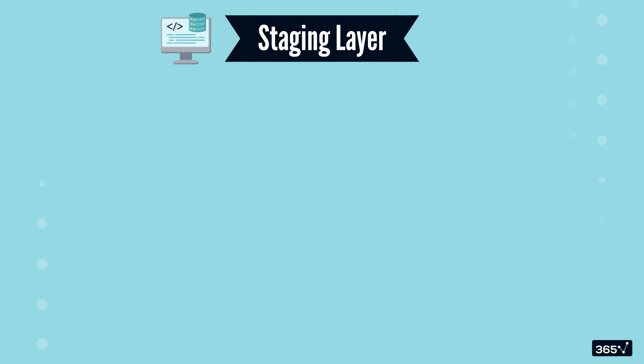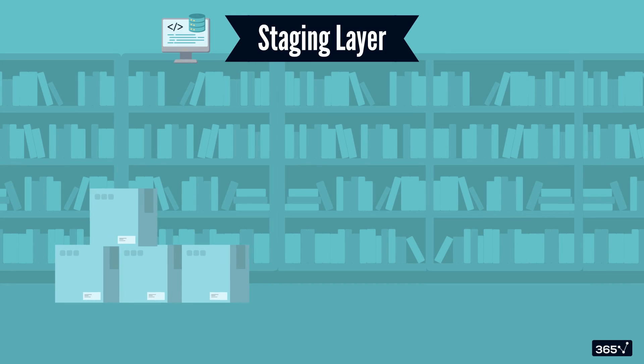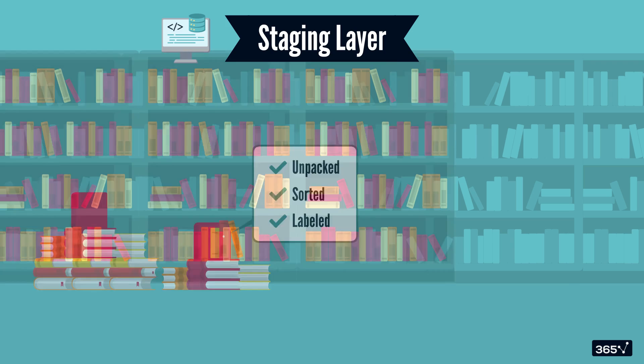Next comes the staging layer. This is where the data gets processed. The staging area is like the library's back room, where books are unpacked, sorted, and labeled before reaching the shelves.